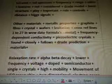Other materials, metallic properties, graphite films, crystal wafers, levitation, cross-reference lines 1 to 27 MO data formulas for metal. Frequency-dependent conductivity. Piezoelectric crystals found closely follows Drude prediction materials.